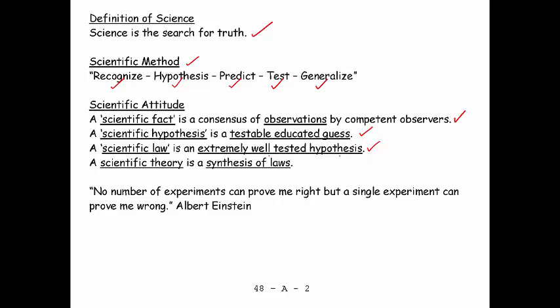And then a scientific theory, one of the most misused words in the English language, is a synthesis of laws. It's not a vague guess. When people say that's just your theory, they are really misusing the term. A theory is the crown jewel of science. If you get a theory named after you, you have truly made it. It's ironic that people misuse the term theory. A theory is a synthesis of scientific laws, the most sophisticated thing.